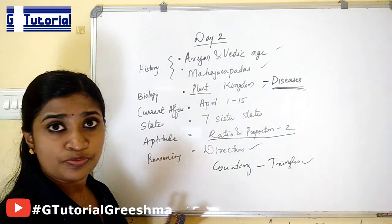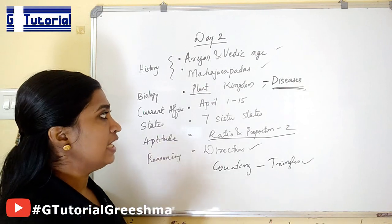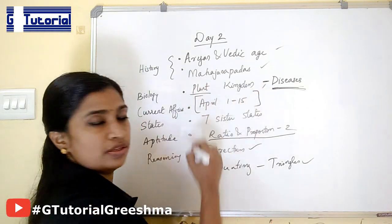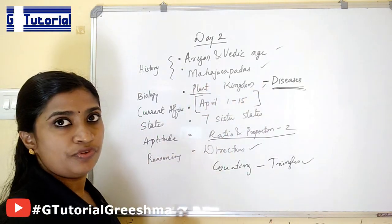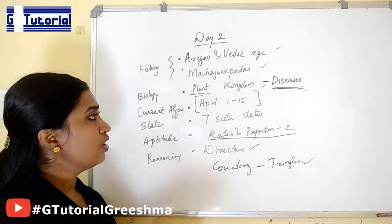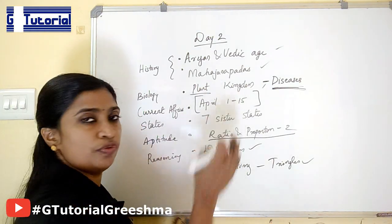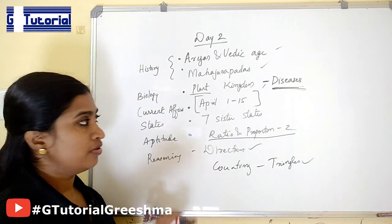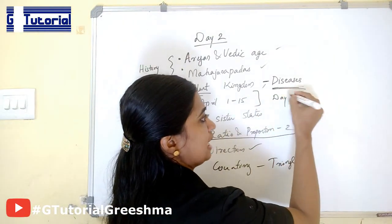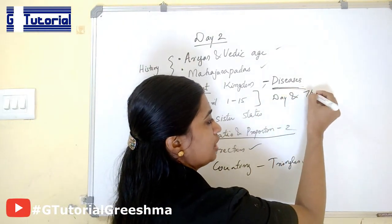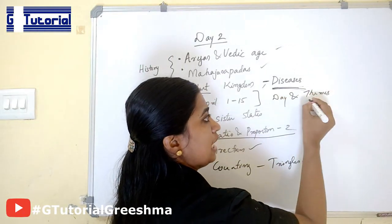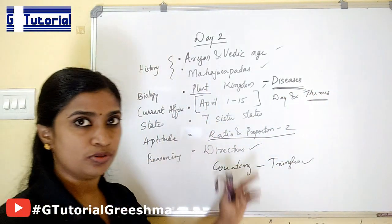Current affairs is very important. Study current affairs from April 1st to 15th. If you are able to get the full month, then study that, or at least 1 to 15. When you are studying this, also study days and themes — important days in the month of April and also the themes for those days. That is important.